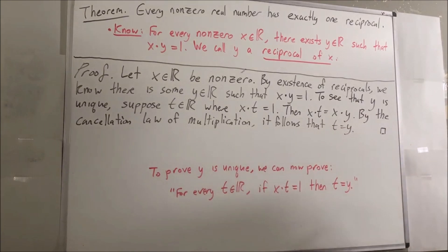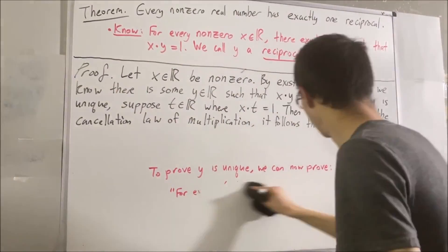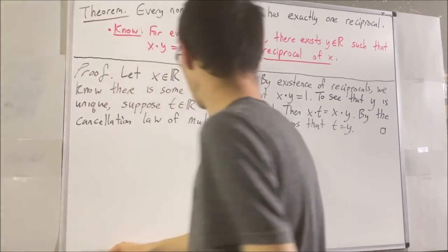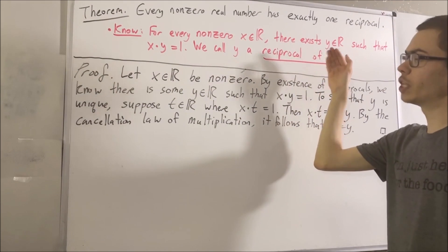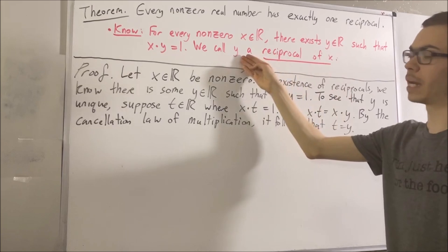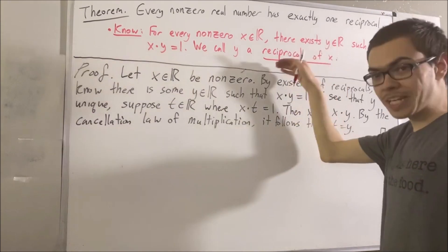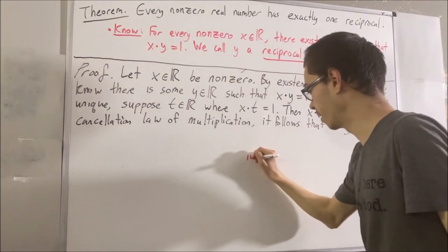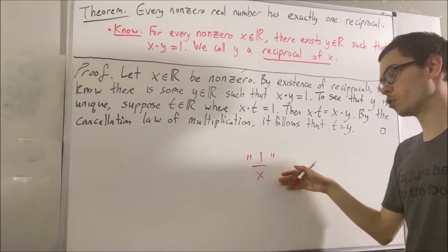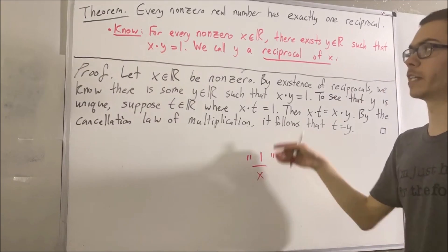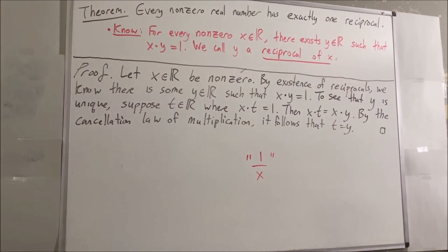And so yeah, that's pretty much the idea of how you could prove this theorem. Now, because we have shown that y is the only reciprocal of x, we're instead going to call y by a different notation. We're going to refer to the reciprocal of x by 1 over x. This will be our symbolic notation for denoting the reciprocal of a non-zero real number. And yeah, that's pretty much it for this video.